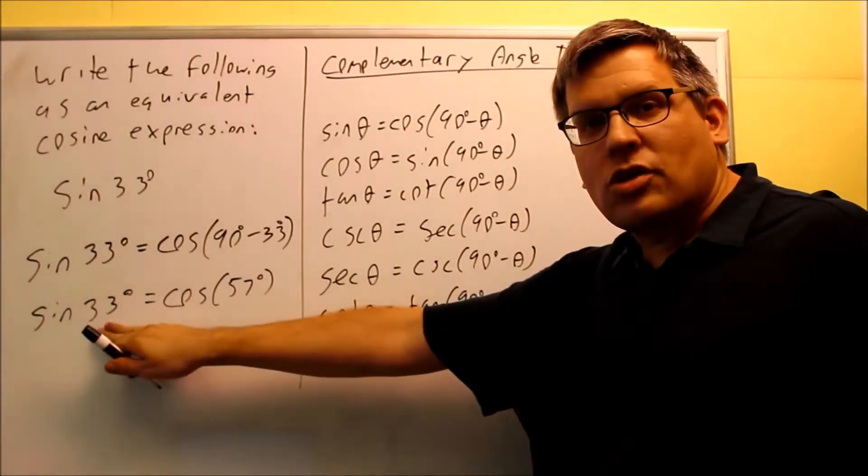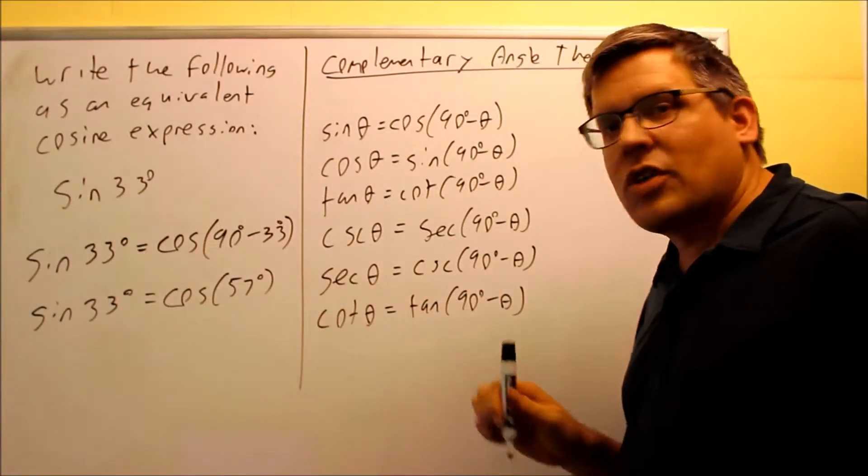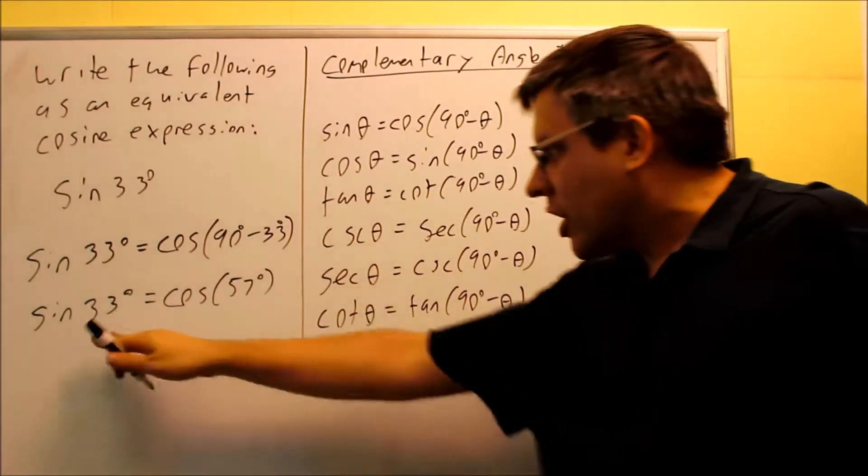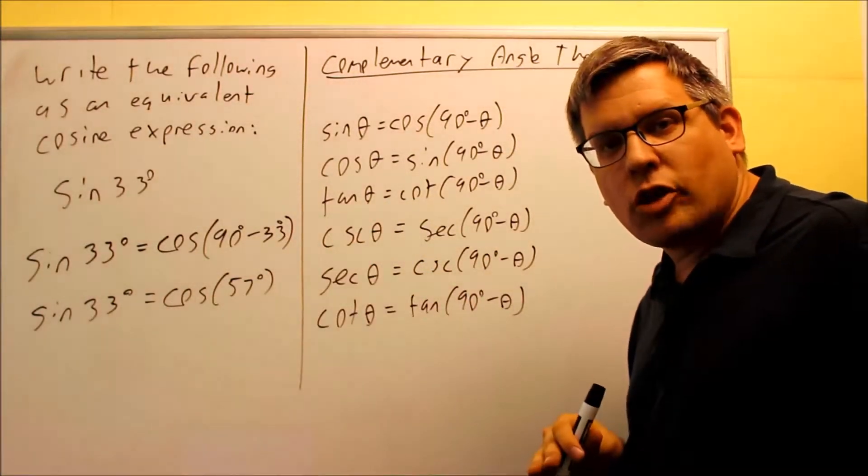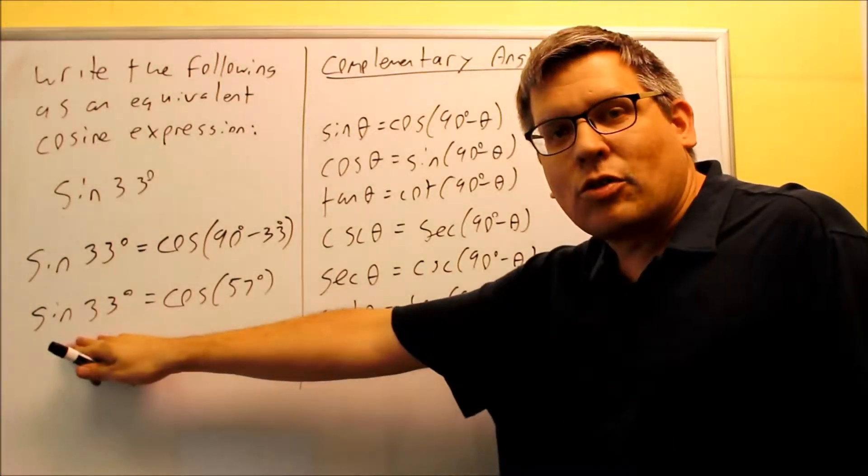So sine 33 should have the exact same value as cosine 57. If you don't believe me, check it out on your calculator. Put your calculator in degree mode. Put in sine 33 in your calculator.